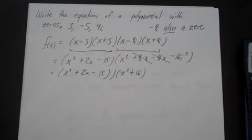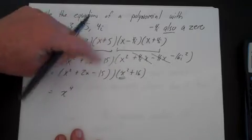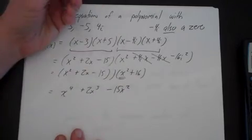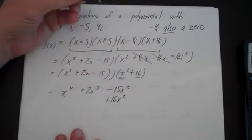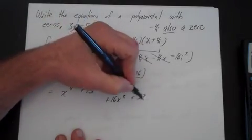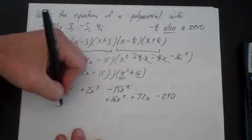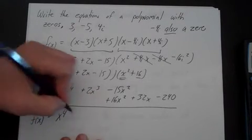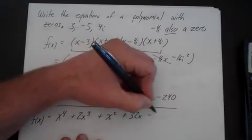Now I'm going to distribute. First, distribute x²: x⁴ + 2x³ - 15x². Then multiply by 16: 16x², which I'll place under the other x² term, plus 32x, and 16 times -15 is -240. Combining like terms: -15x² + 16x² = x². So the final answer is x⁴ + 2x³ + x² + 32x - 240.